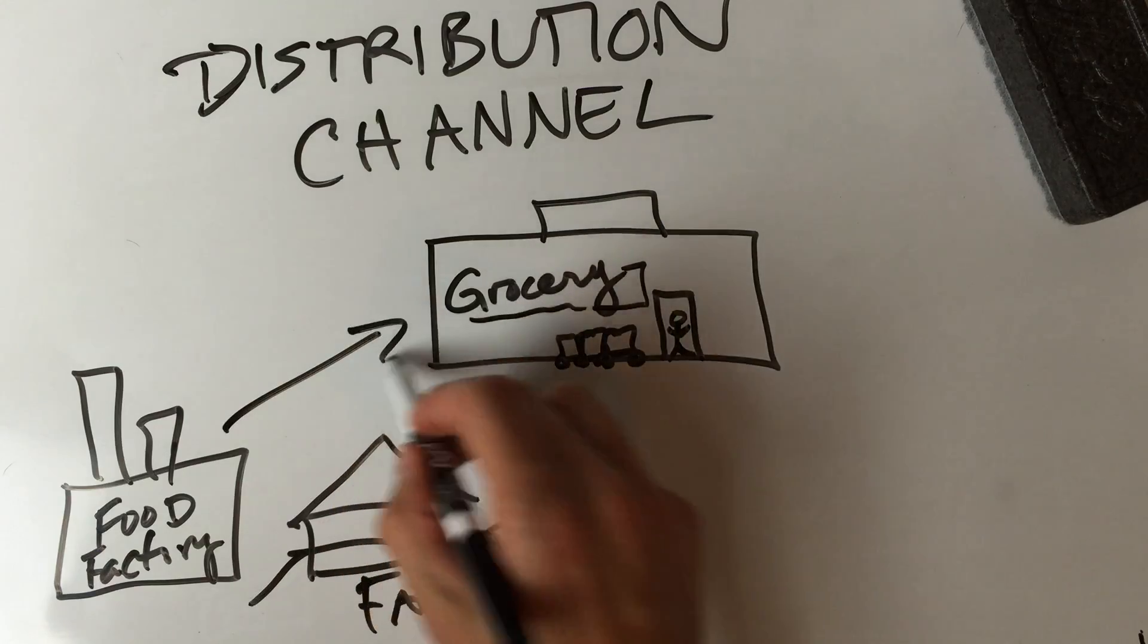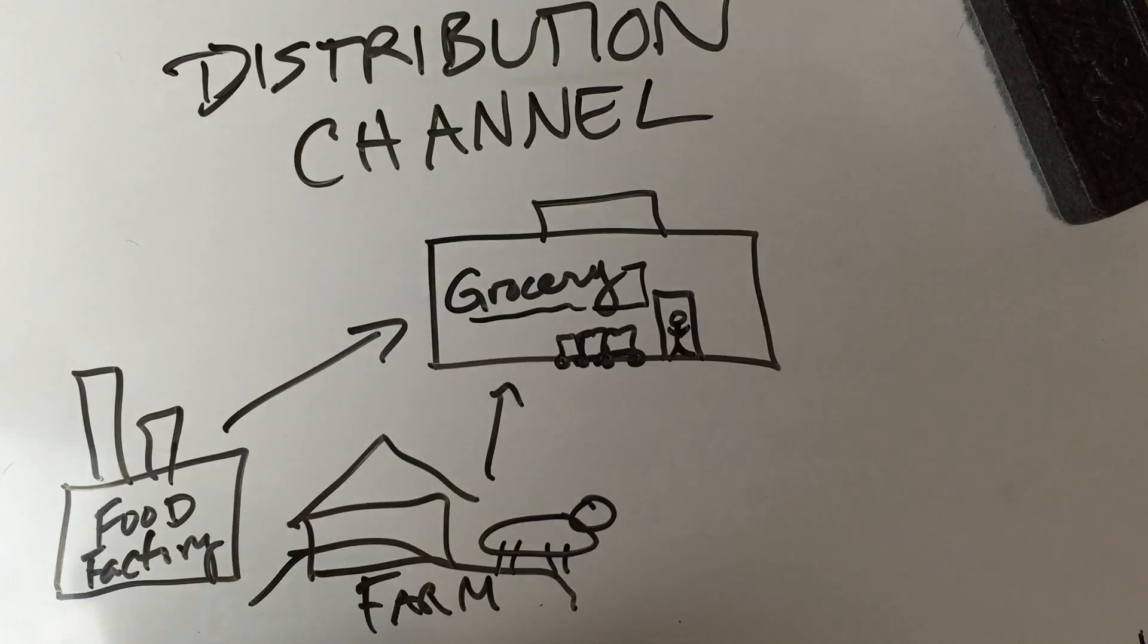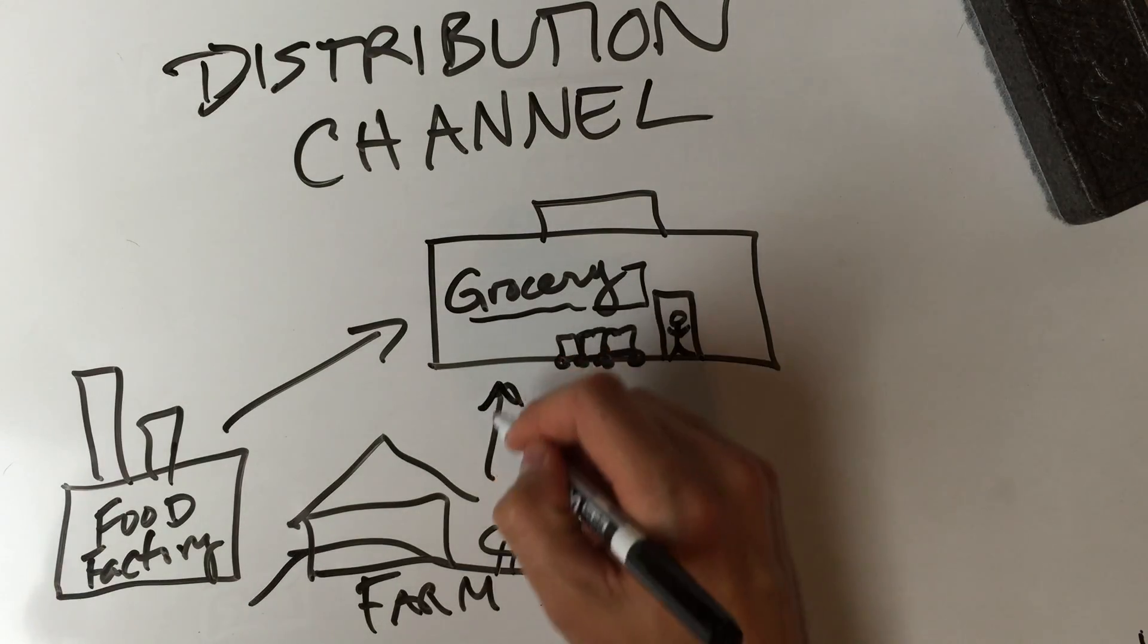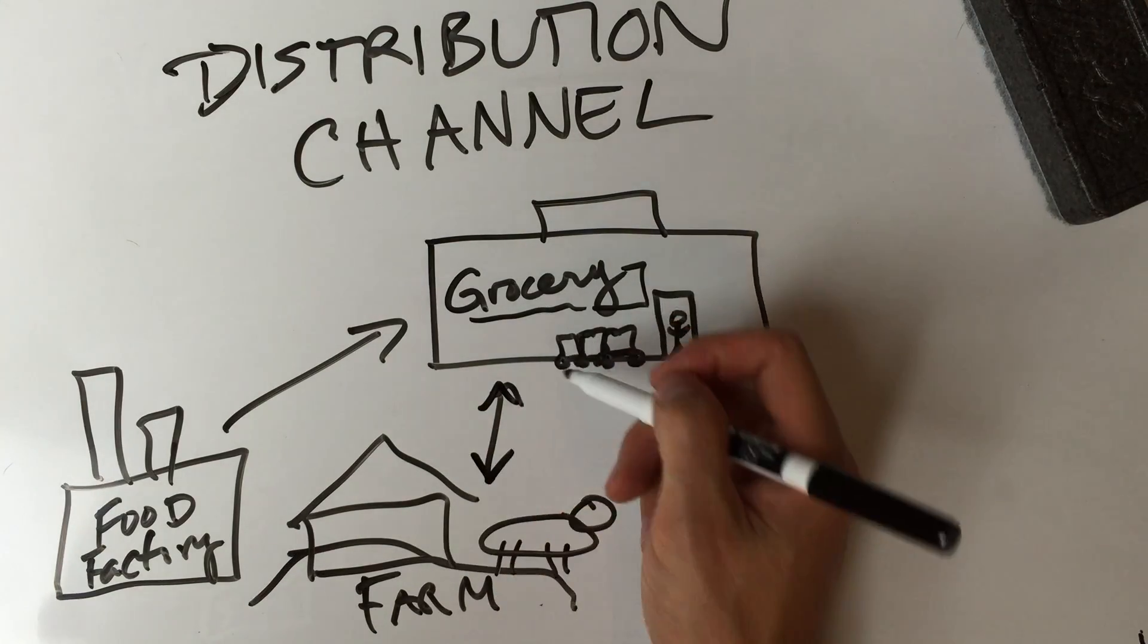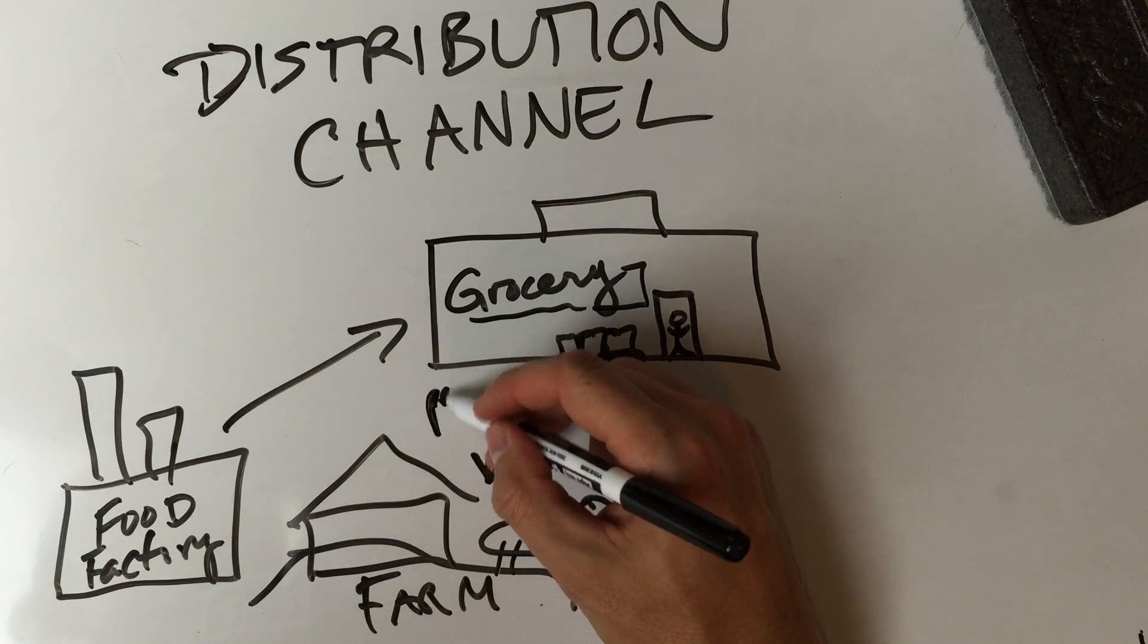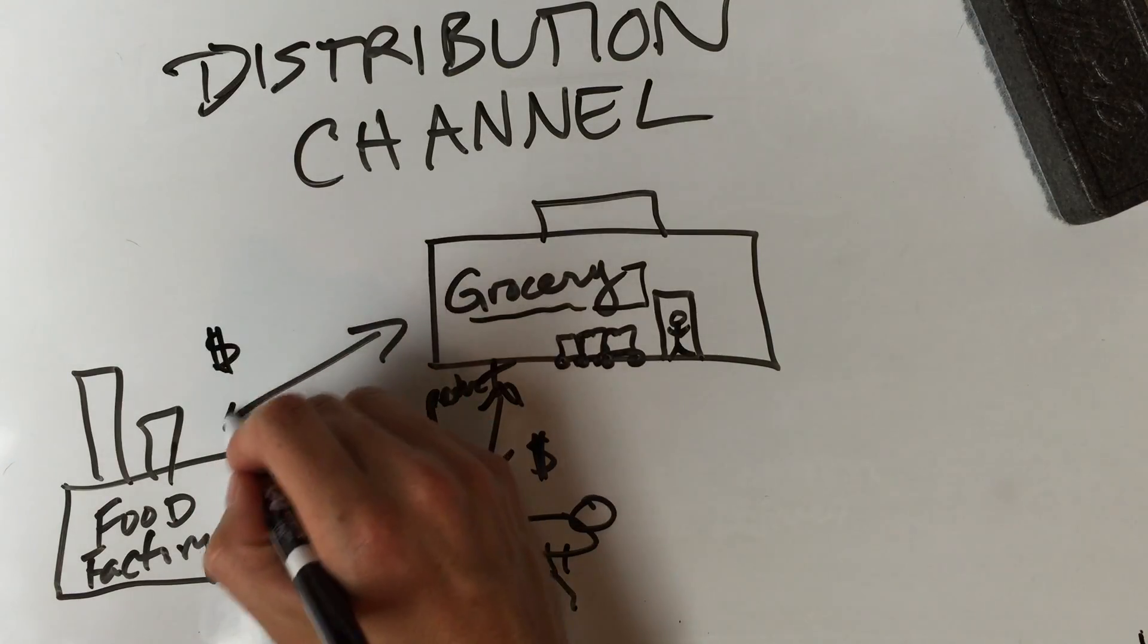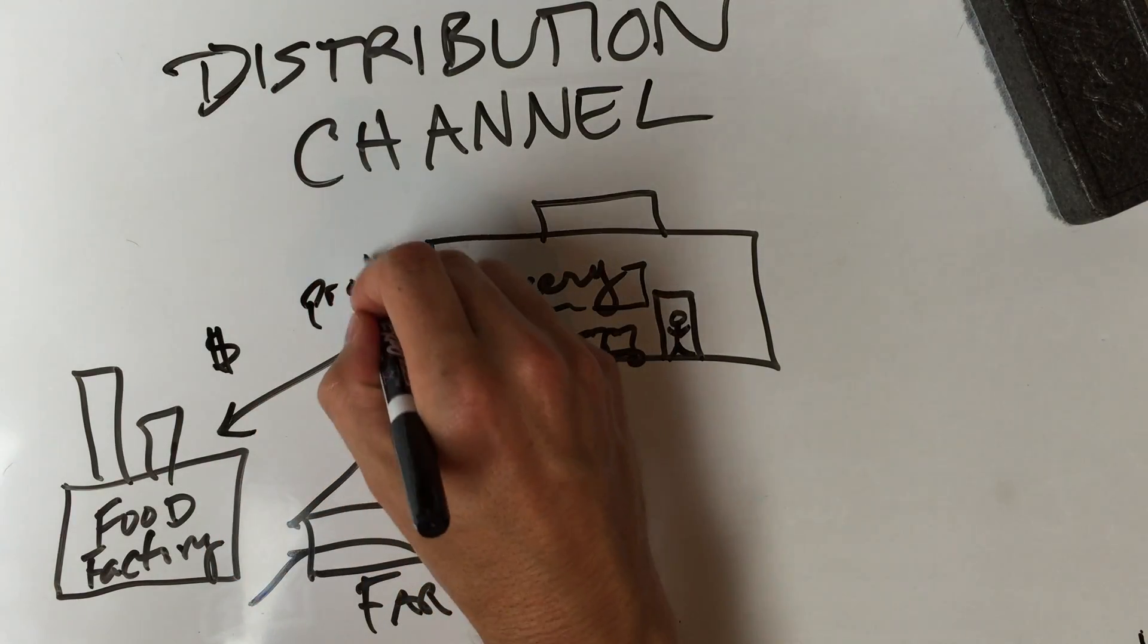So those places create the products. The grocery store distributes the products and this is a transaction here. These people sell the product to this business and they collect money this way and product goes the other way. You can't read that but I don't care. Money coming this way, product going this way.